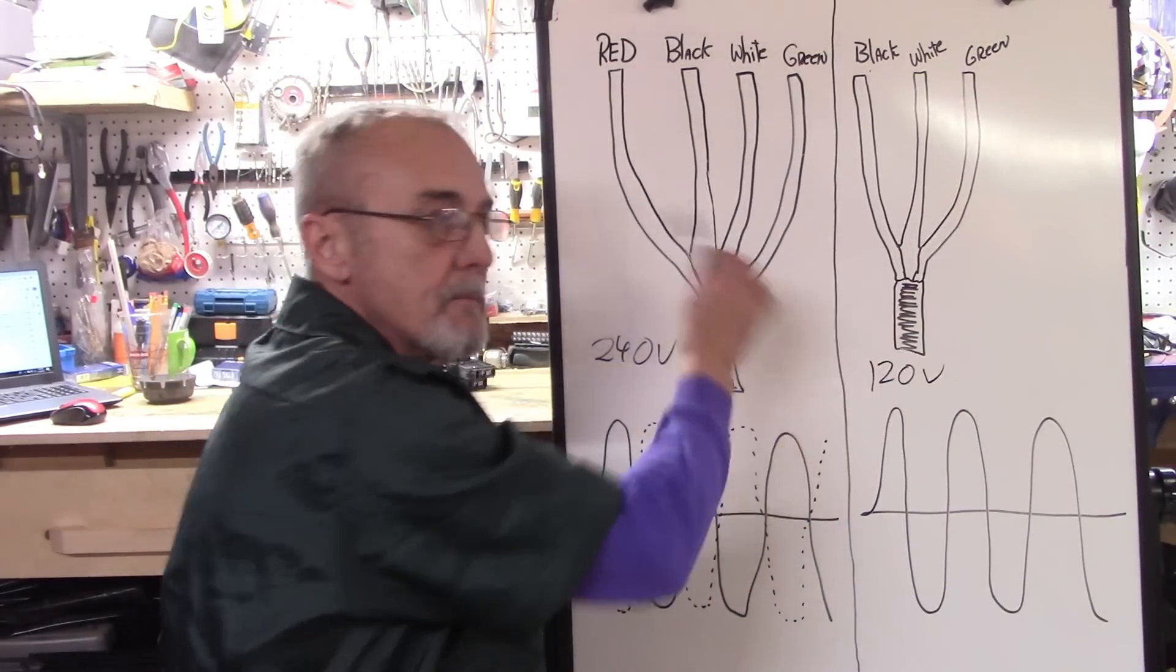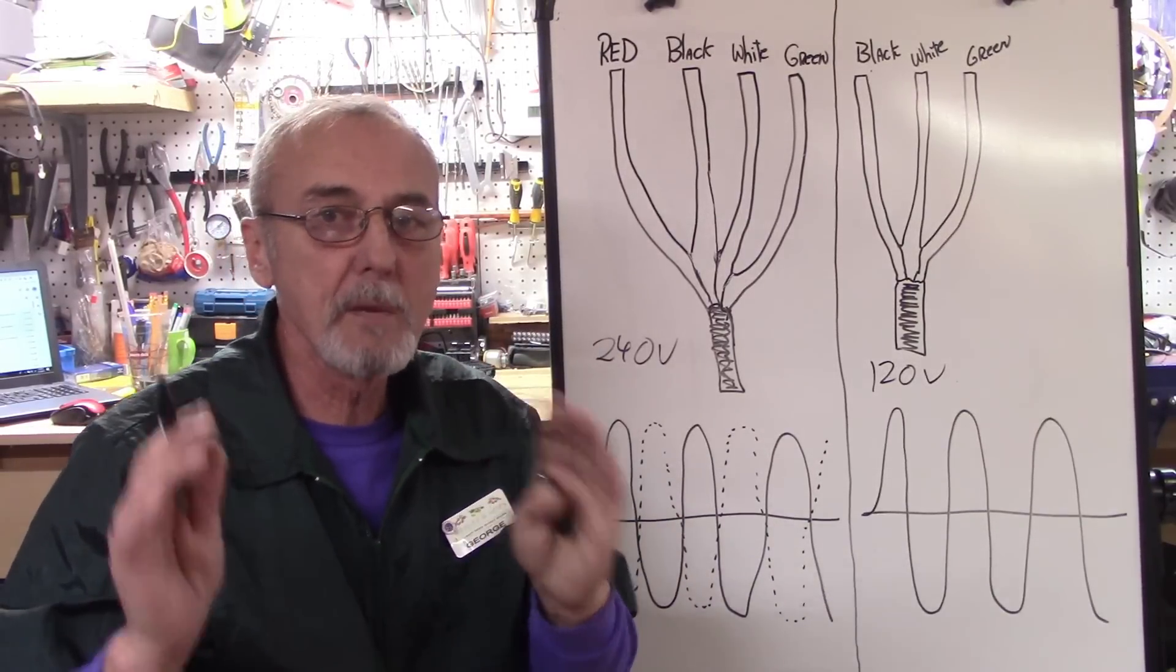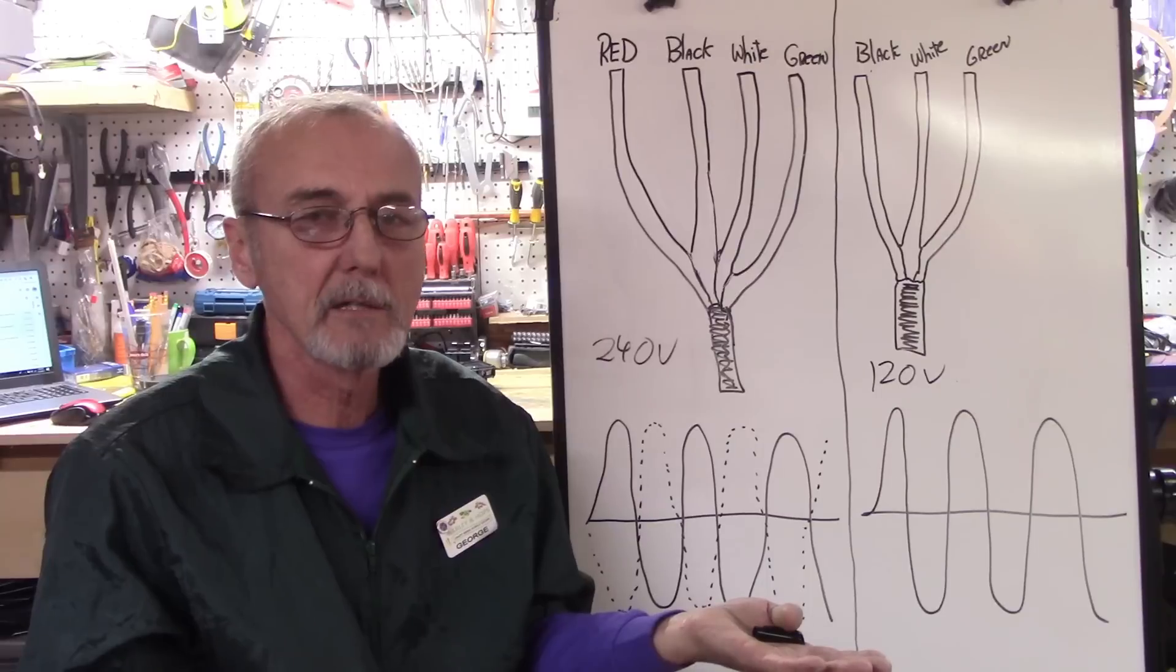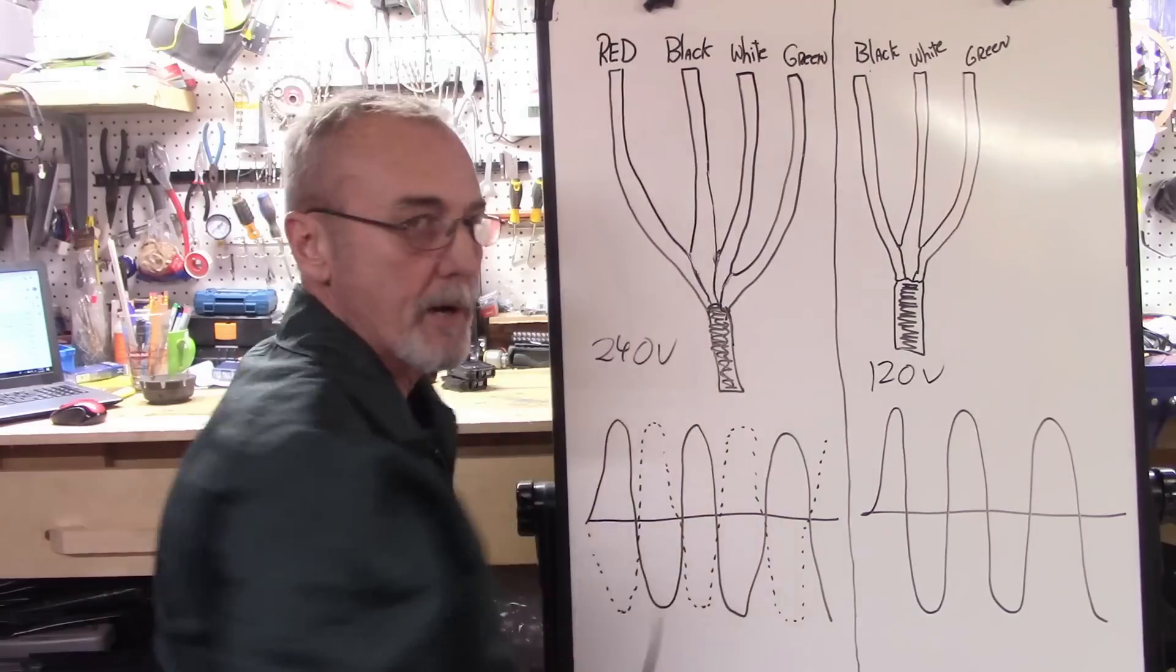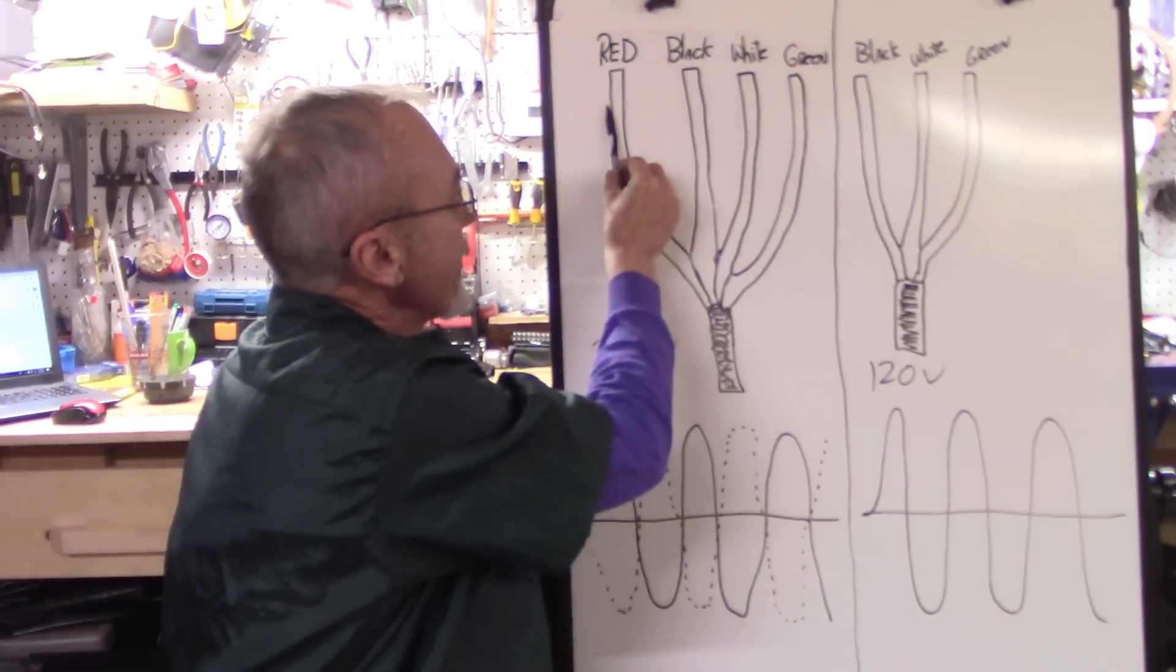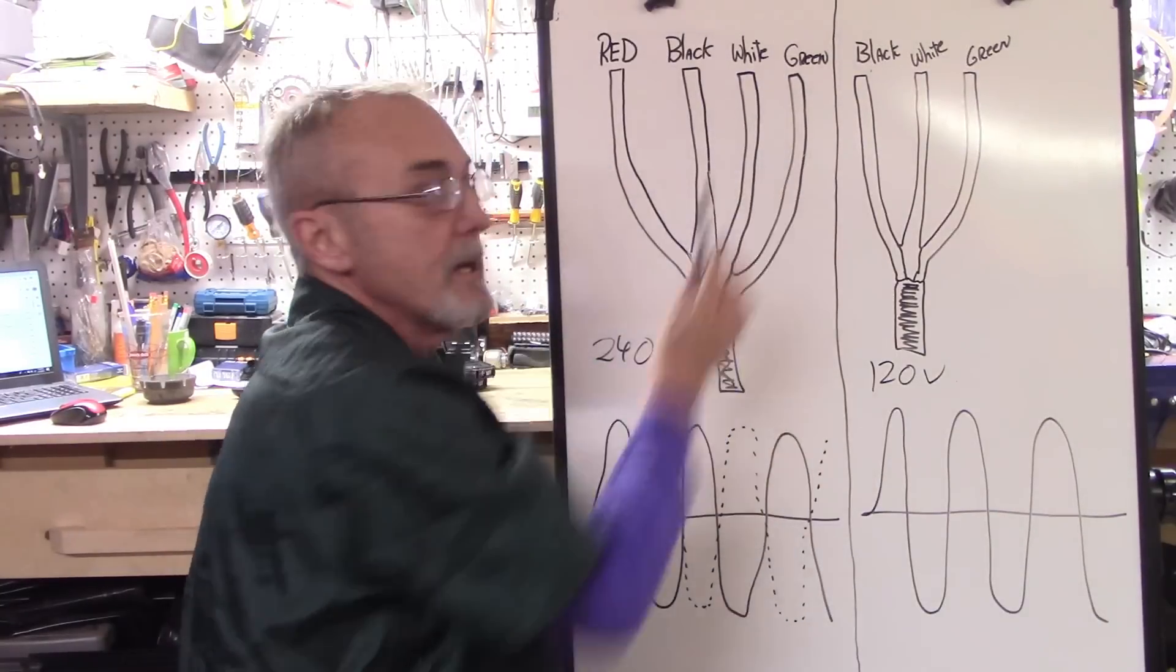Now, both of these can be used interchangeably. Let me explain that so that we make sure that we don't get too off track because we don't want to get too technical. You've got a red, a black, a white, and a green. Your red is hot, black is hot, white is neutral, and green is ground.